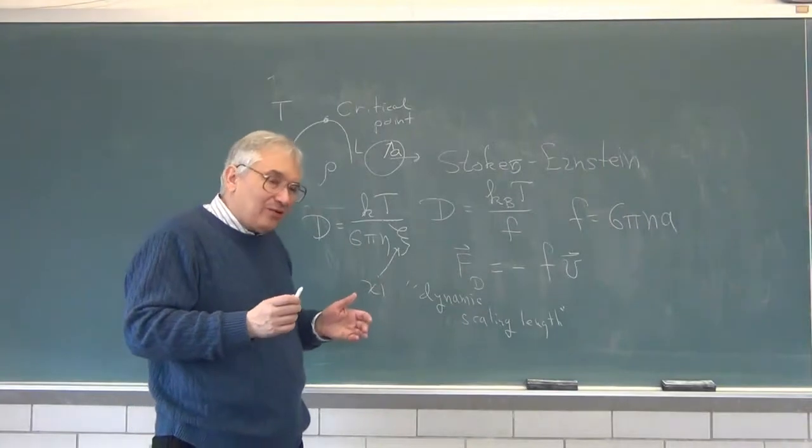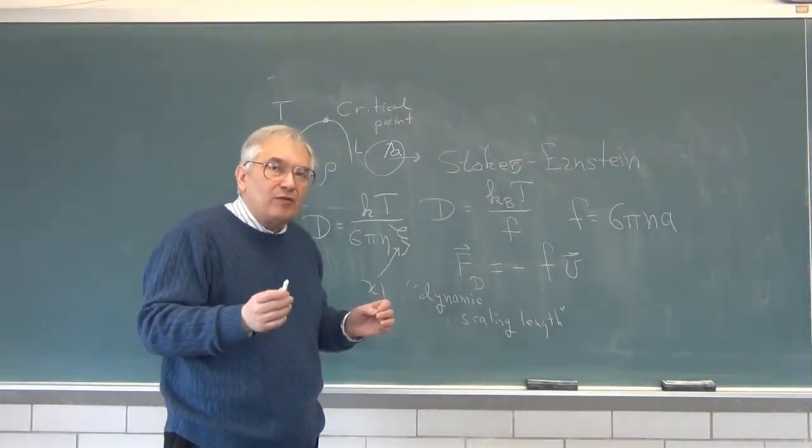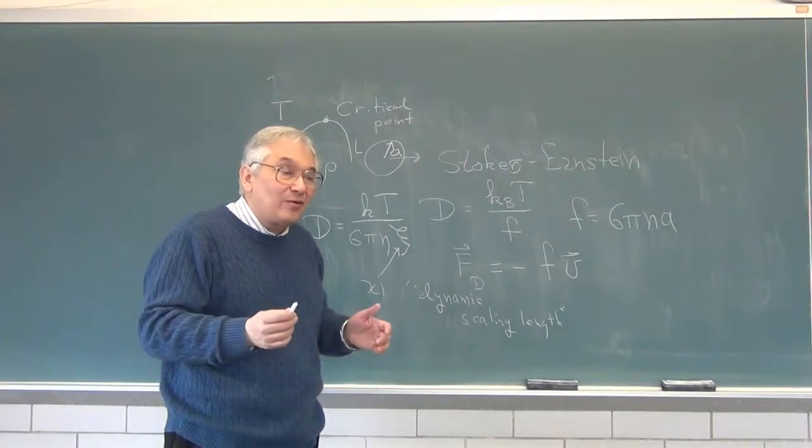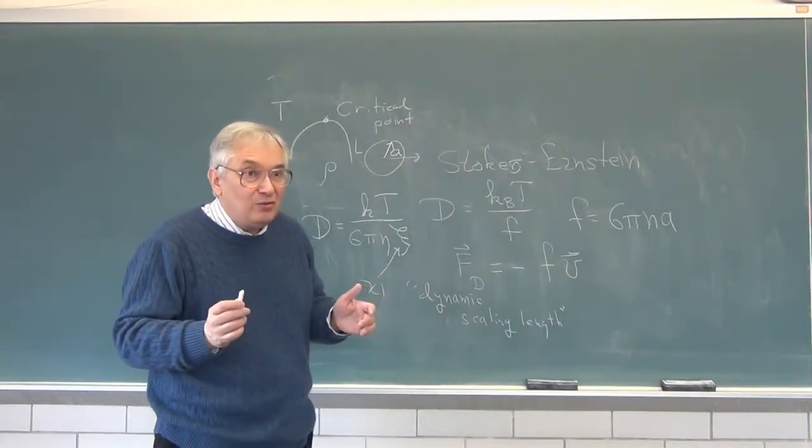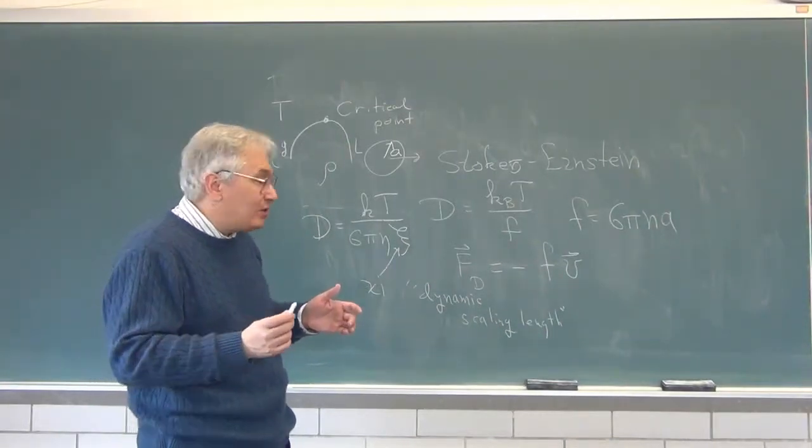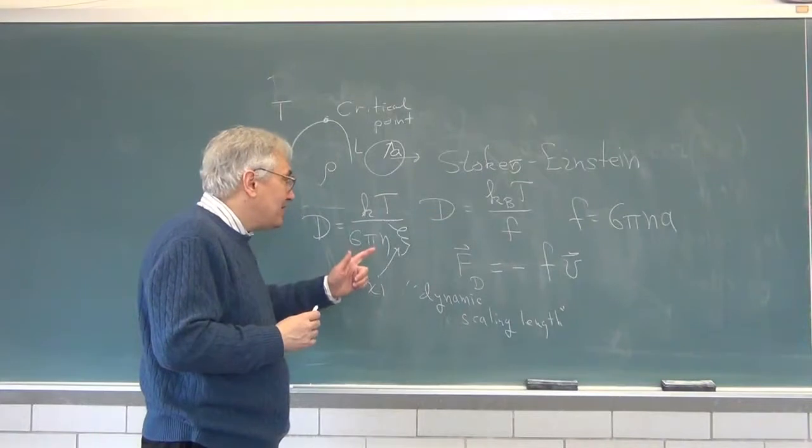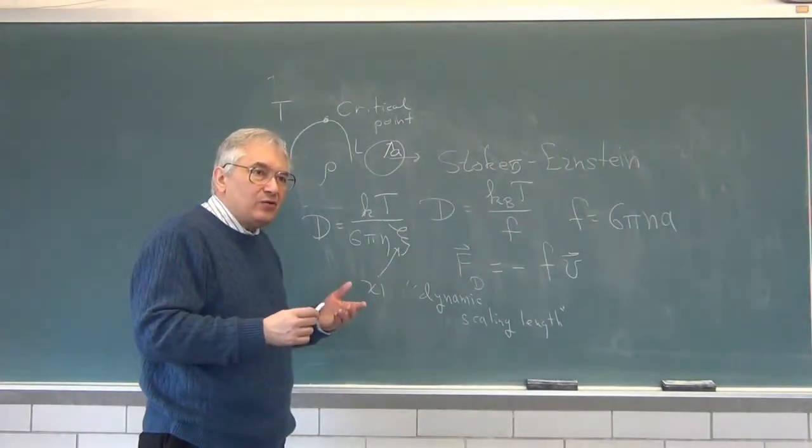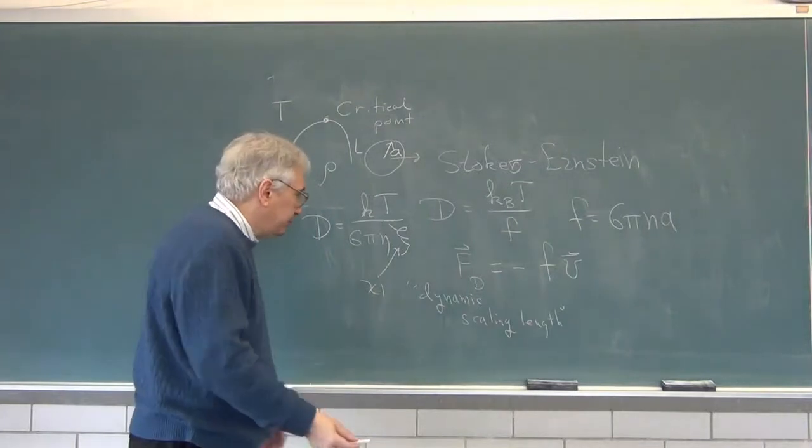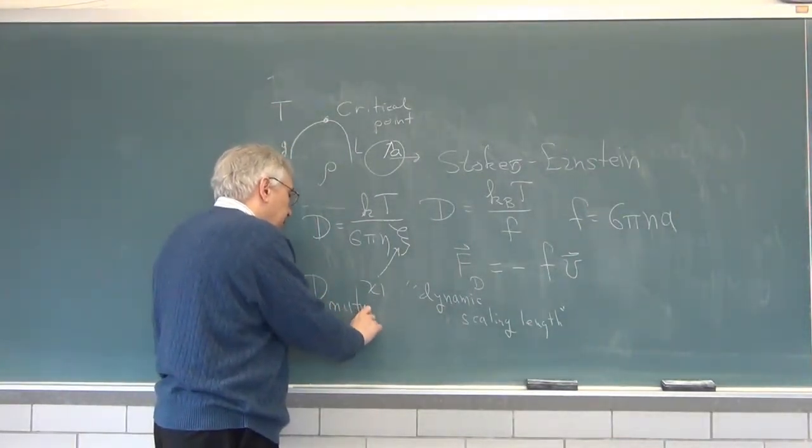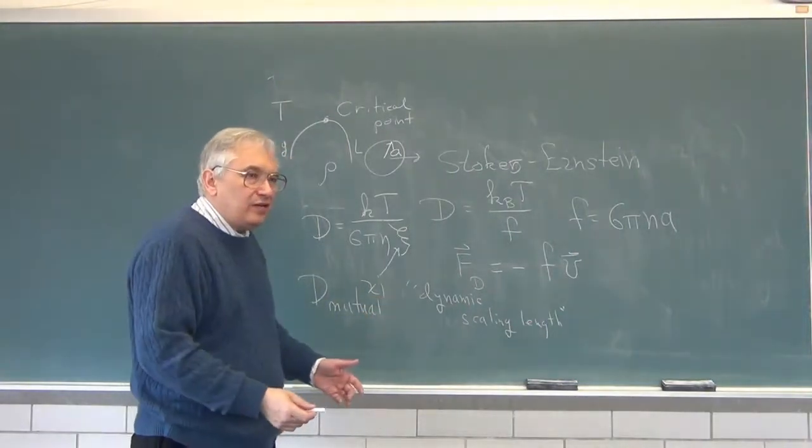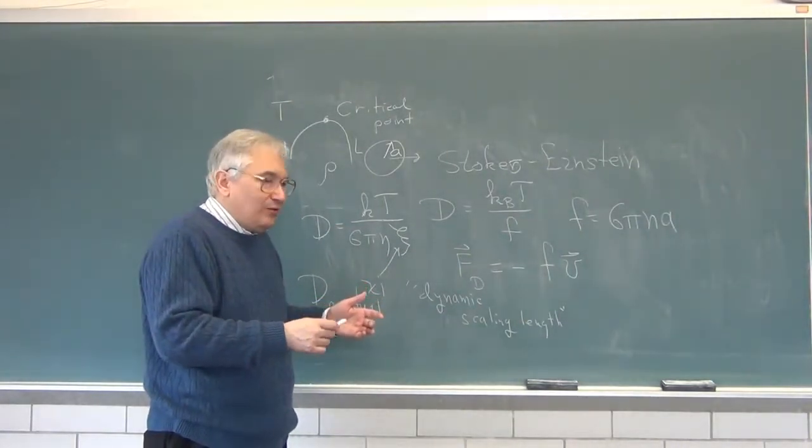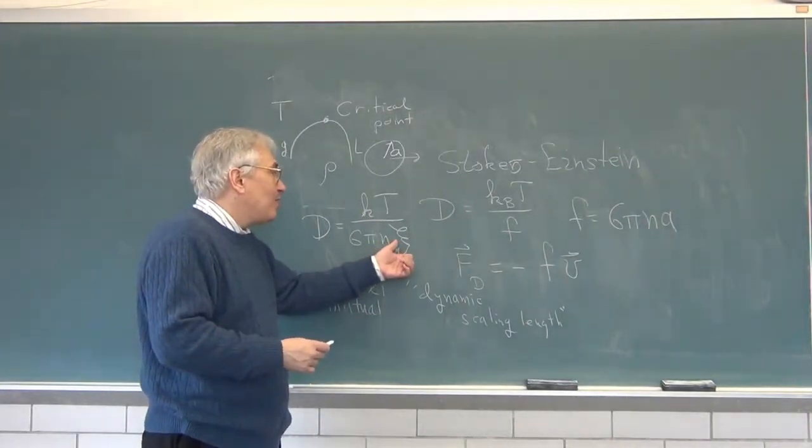Psi gets bigger and bigger as you get very close to the critical point. The assertion is the reason that diffusion slows down is that psi gets very large and you're looking at diffusion of a collective object whose size becomes very big. We are not going to talk about critical points more in the course.